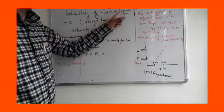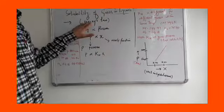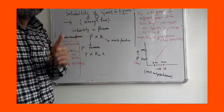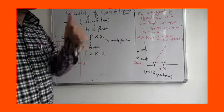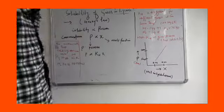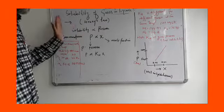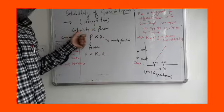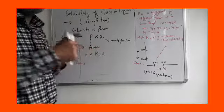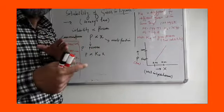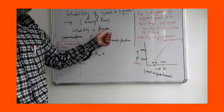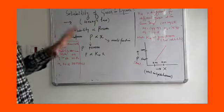Henry's law describes the solubility of gases in liquids. Henry was the first to give a quantitative relationship between solubility of a gas and its pressure in a liquid solvent. The statement of the law is: at a given temperature, the solubility of a gas is directly proportional to its pressure.